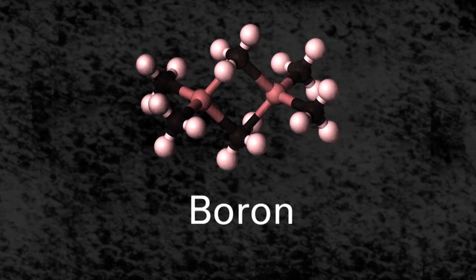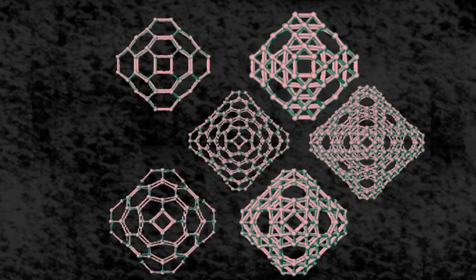Another metalloid with many allotropes is boron, each with its own unique structure.